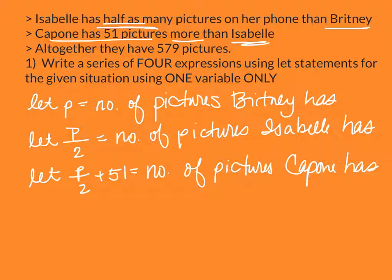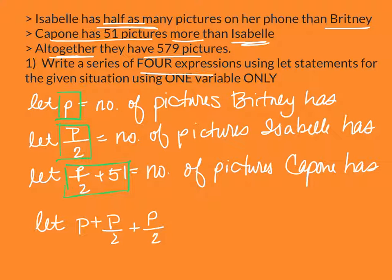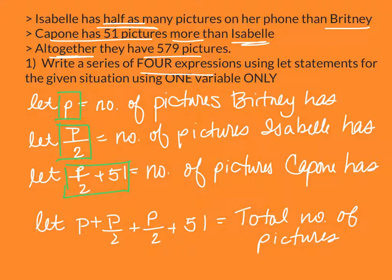Now, it does say that we need to write four expressions, and it tells us how many they have all together. So our final let statement is going to be to find the total. We've got an expression for each person. I know we find a total by adding them together. So there's each person's amount of pictures, and that equals the total number of pictures.